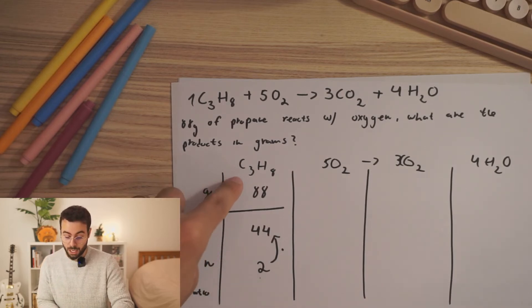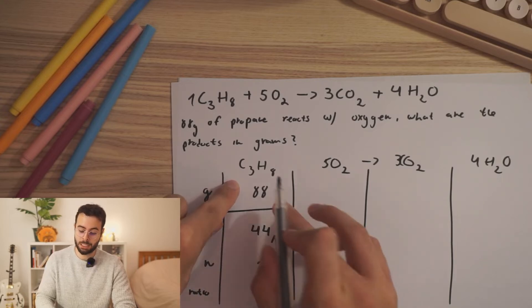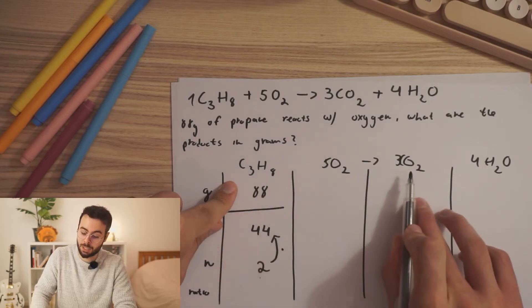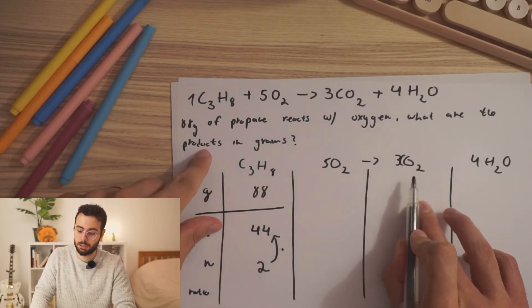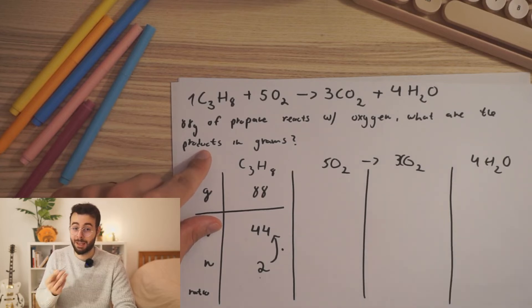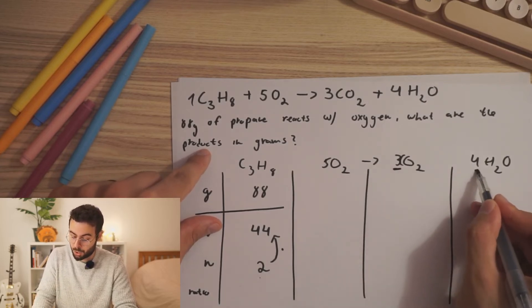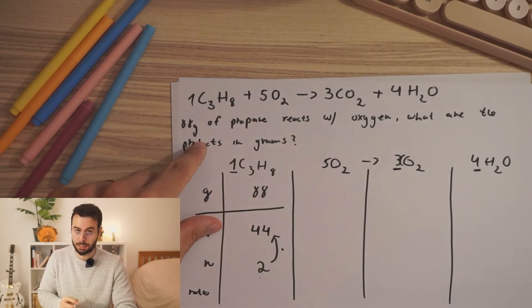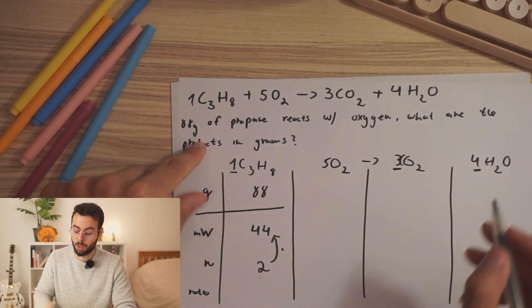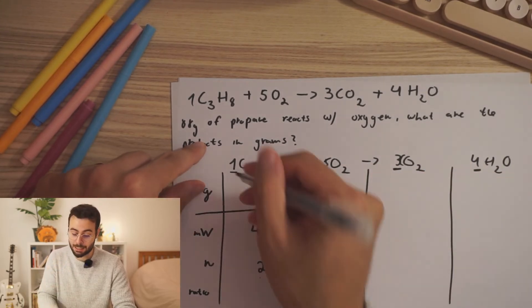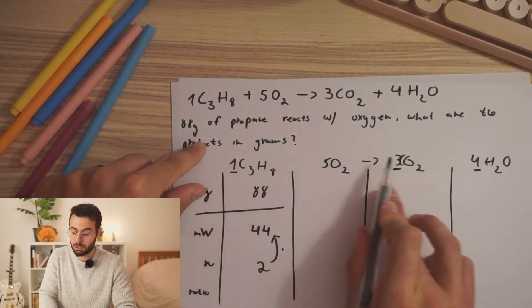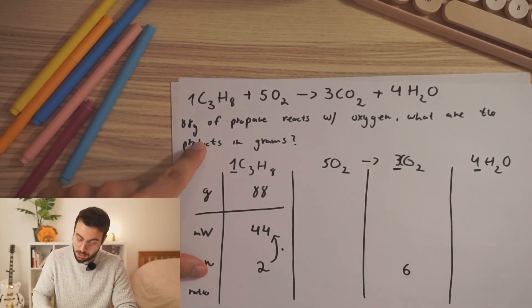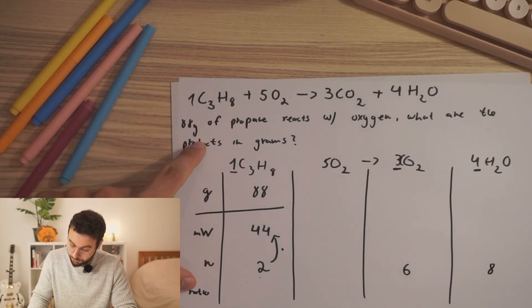So if we have 2 moles of propane, it means that for every 2 moles of propane, we will have 6 moles of carbon dioxide and 8 moles of water. Why? Because of the ratio of the coefficient. If we know that every 1 mole that reacts will produce 3 moles over here and 4 moles over here, it means that if we change it to 2, it will be 2 times 3 and 2 times 4, which will give us 6 moles of carbon dioxide and 8 moles of water.